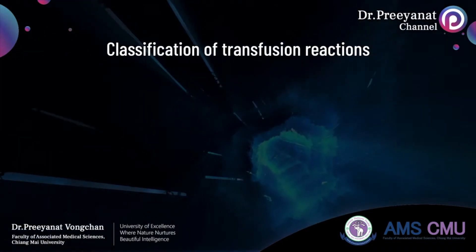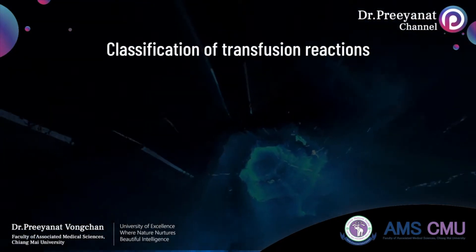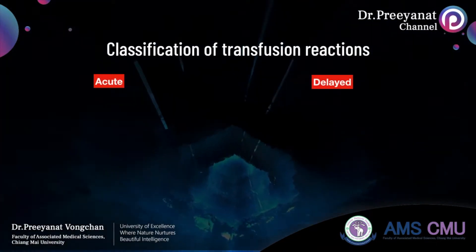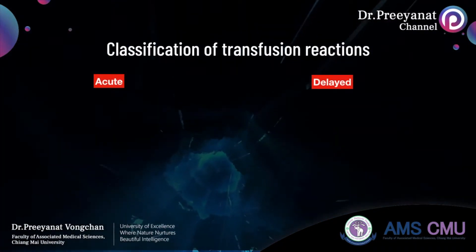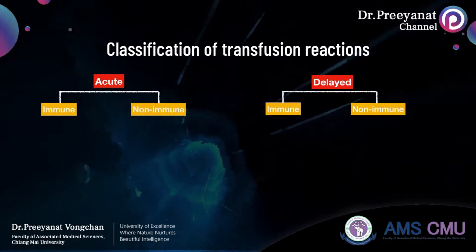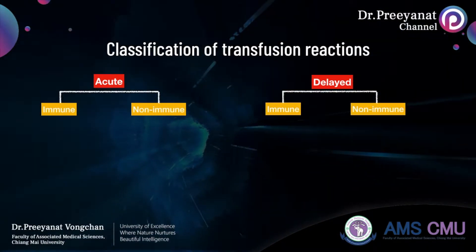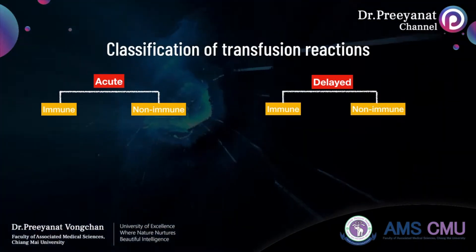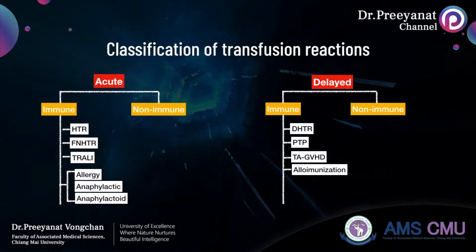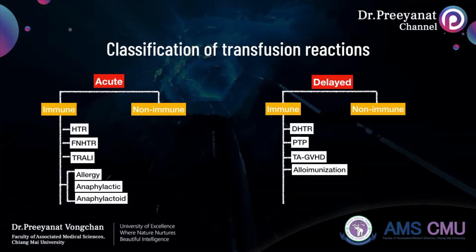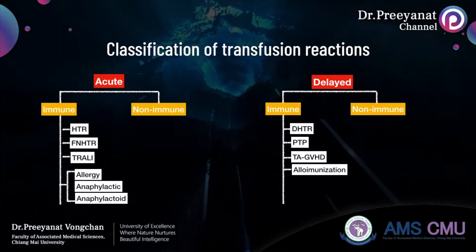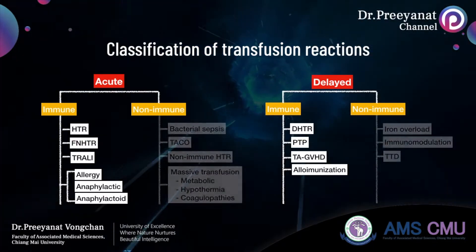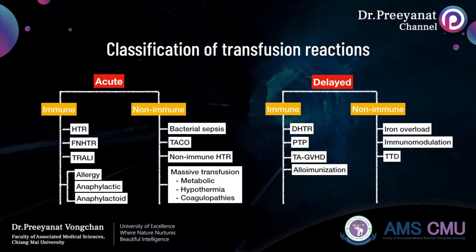Transfusion reactions can be classified into two main groups — acute and delayed — depending on the onset of the reaction. Both groups are also divided into immune and non-immune mediated based on causes. Immune-mediated reactions mean that patients produce antibodies specific to red blood cells, white blood cells, platelets, or plasma, while non-immune mediated reactions are caused by other factors.